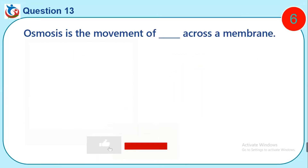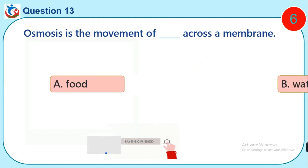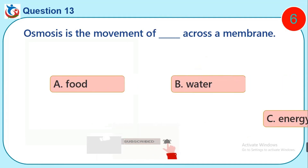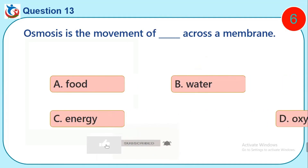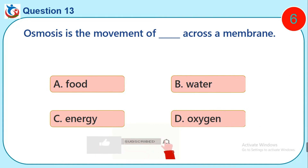Question 13. Osmosis is the movement of dash across a membrane. A. Food. B. Water. C. Energy. D. Oxygen.